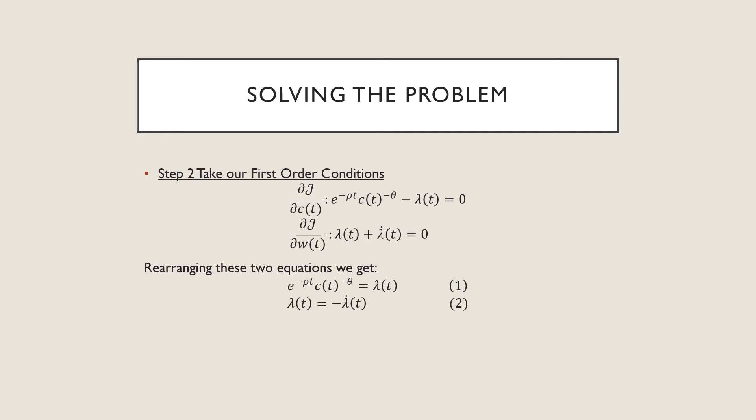So step number two, we're going to take our first order conditions. It looks like we could just work at it directly, but we still don't know what this lambda dot is.